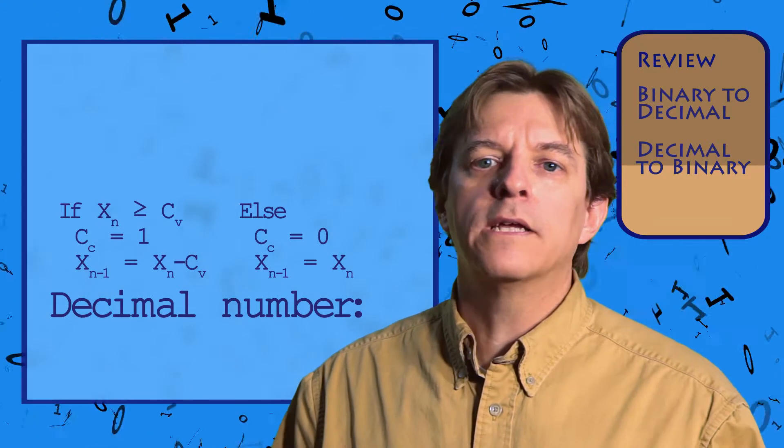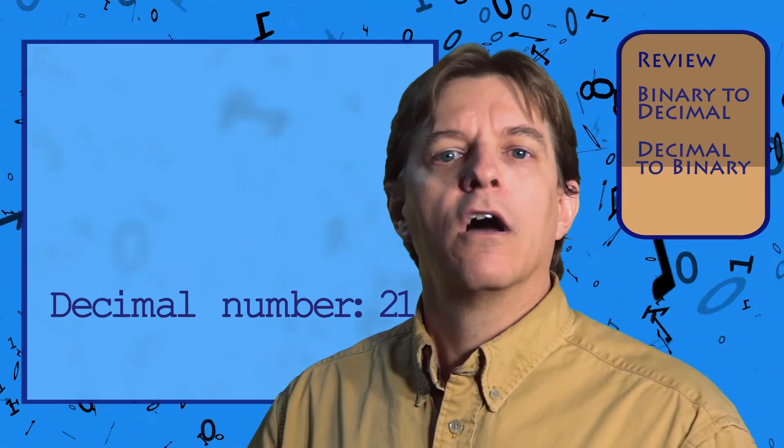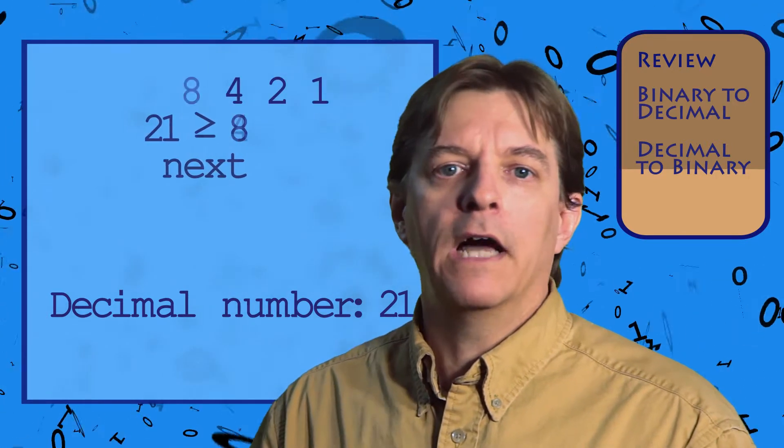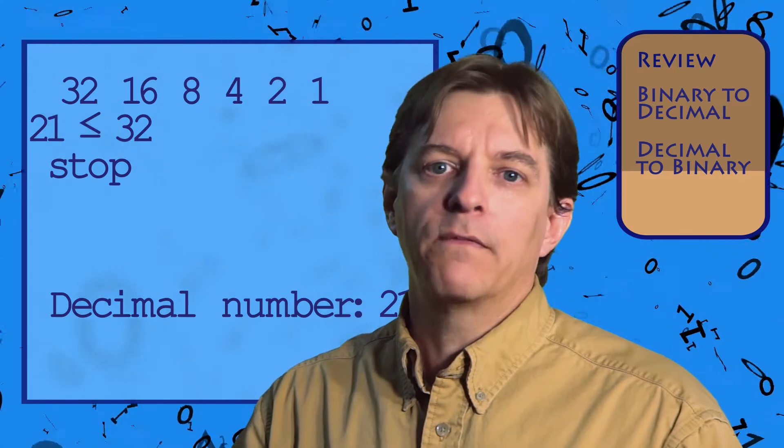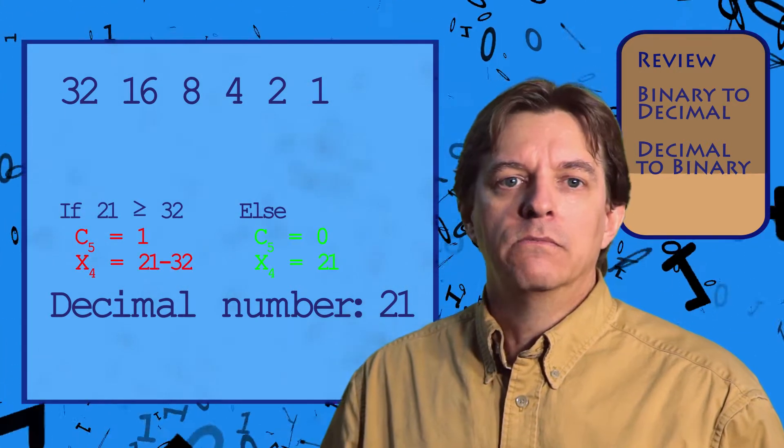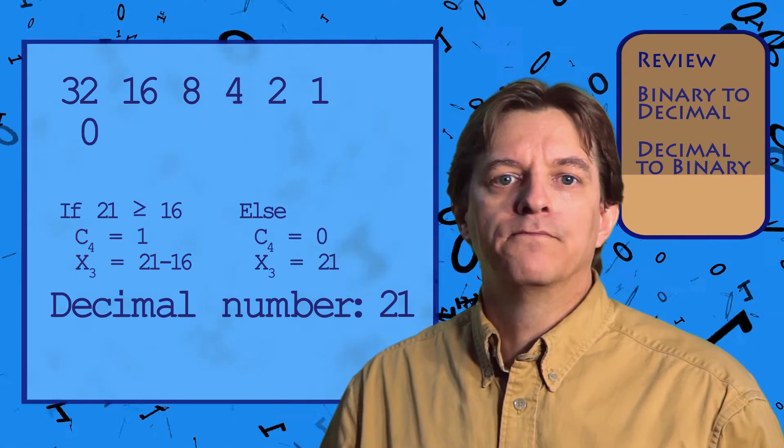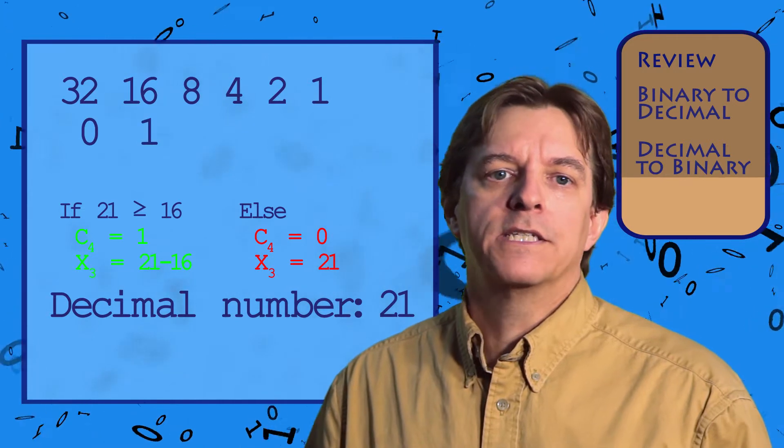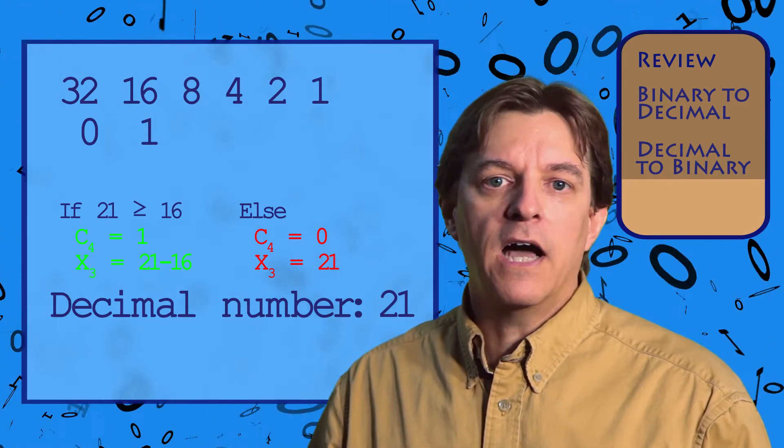So now, let's try the earlier example of 21. First find our columns. Start with 1 and double until we have a value greater than 21. Then start from the left and apply the rule. 21 is less than 32, so we write a 0 and move to the next column. 21 is greater than 16, so we write a 1 below the 16, subtract 16 from 21, leaving us 5.